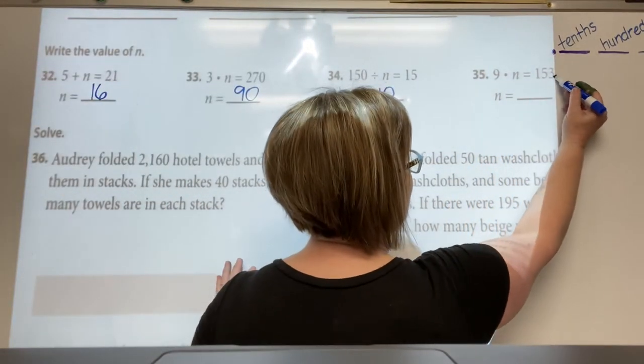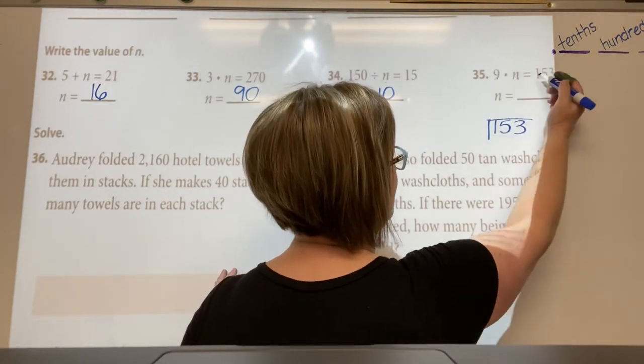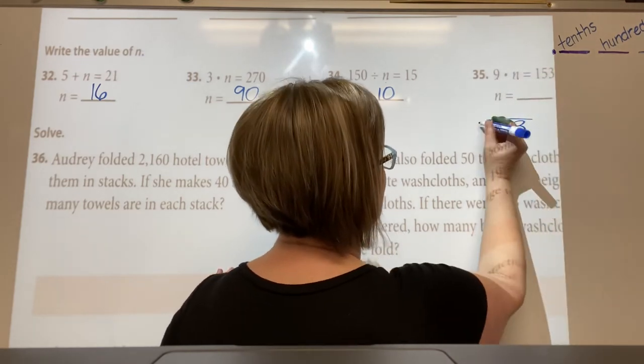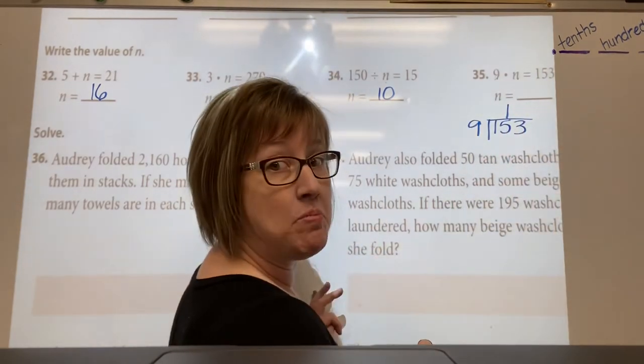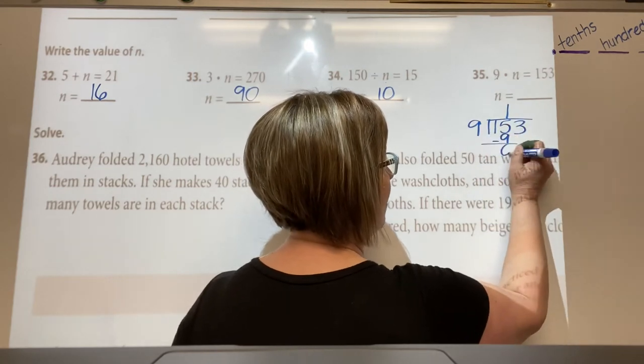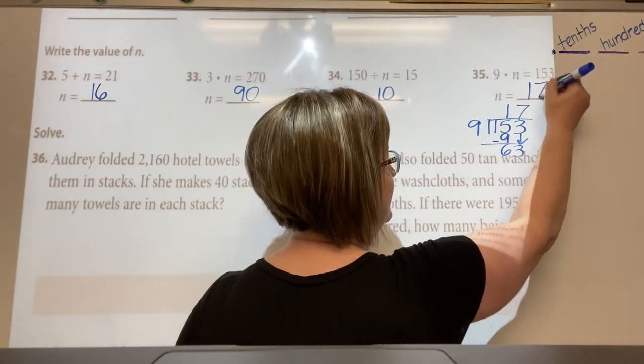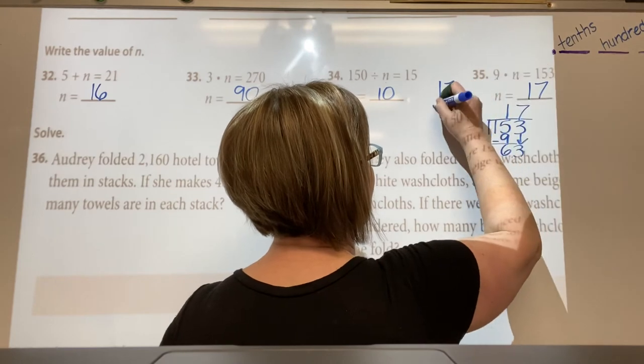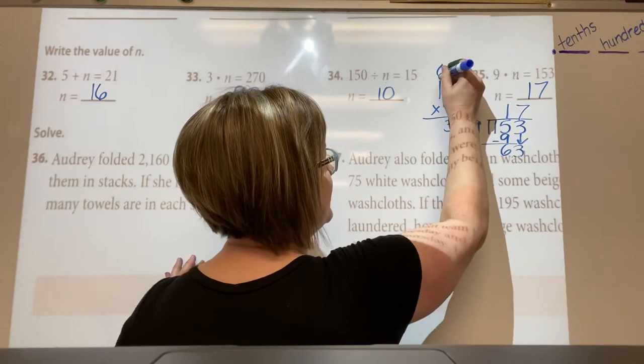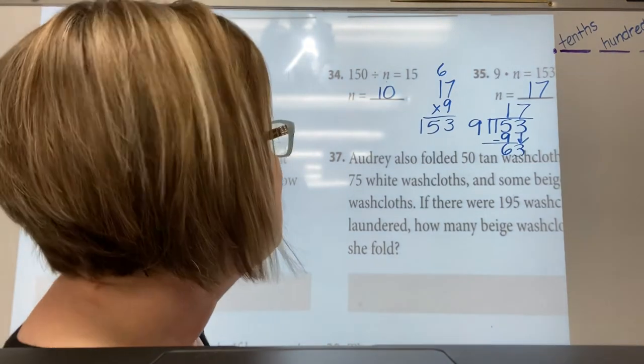Okay, the last one is 9 times n equals 153. So 153 divided by this number gives you this number. So do 153 divided by 9. 9 goes into 15 one time, 15 minus 9 is 6, bring down, 6 smaller than 9, bring down, 9 goes into 63 seven times. So then you would do 17 times 9 to make sure it equals this. 9 times 7 is 63, 1 times 9 is 9 plus 6 is 153, it works. So don't just be happy and satisfied with your number, make sure it's the right one, especially for a test.